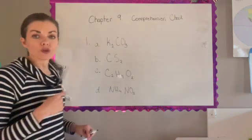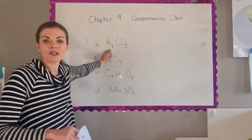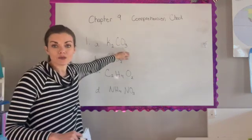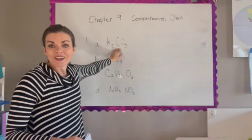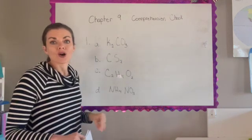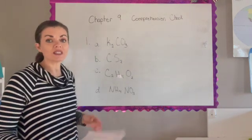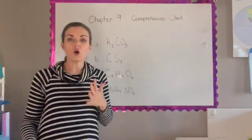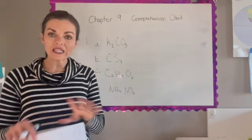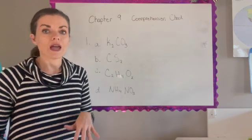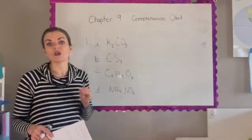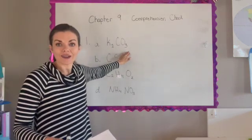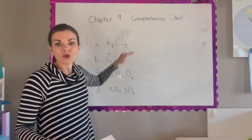For the first compound, we have potassium, which is a metal, and CO₃, which is a polyatomic ion called carbonate. Since it contains a metal, this is an ionic compound. In water, ionic compounds split into their parts and conduct electricity, so in solution we'll have two potassiums and two carbonate ions, and this compound will conduct electricity.